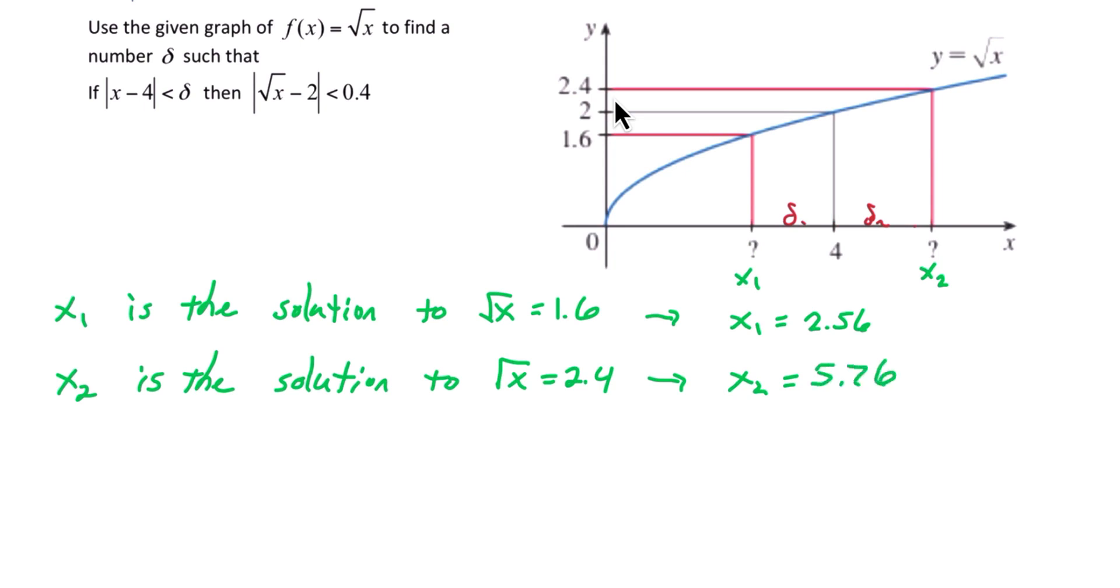So now we can find our deltas. Focusing on delta 1, delta 1 is going to be 4 minus x1, which we found to be 2.56, and that is 1.44.